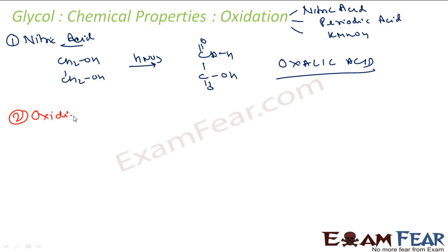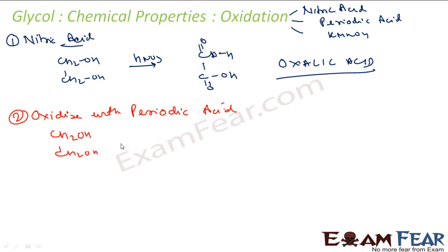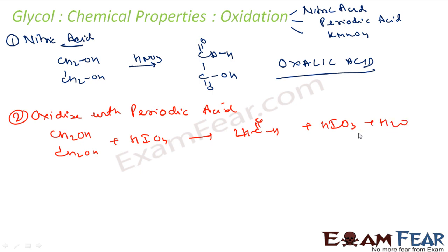The next oxidation condition is periodic acid (HIO4). When we take CH2OH-CH2OH and react it with HIO4, we get 2 HCOH (formaldehyde) and HIO3 plus water. We will not discuss the mechanism as it is not required for our syllabus.